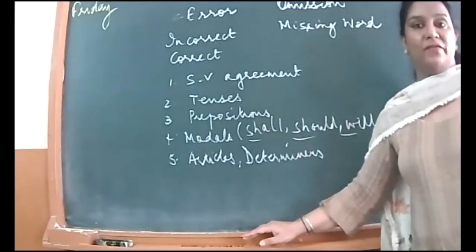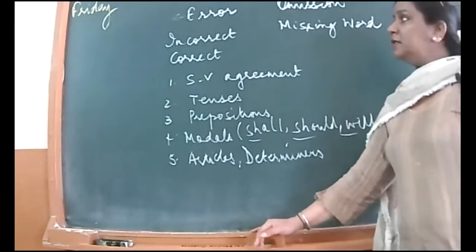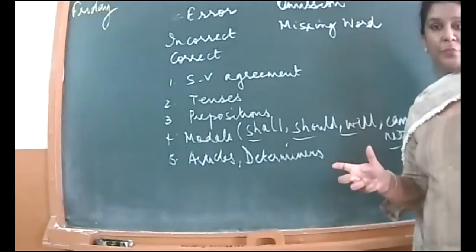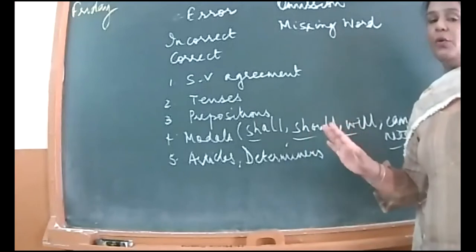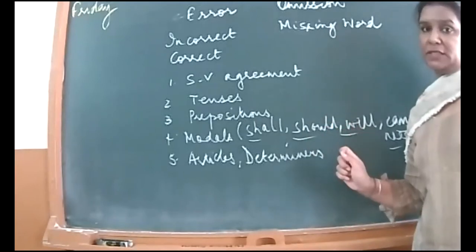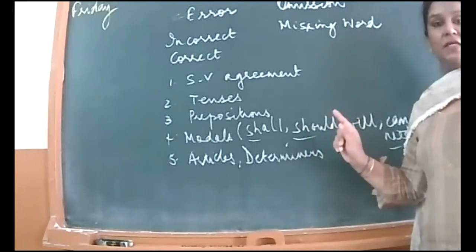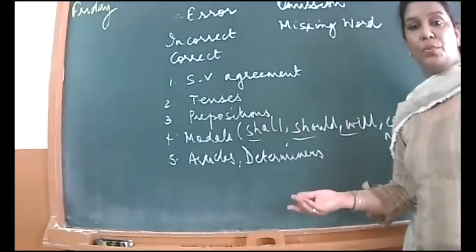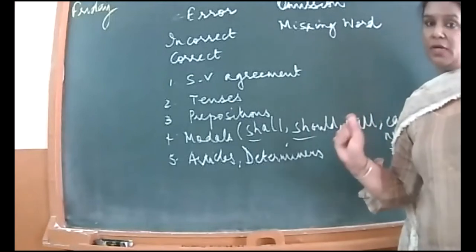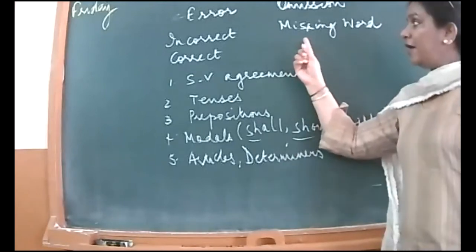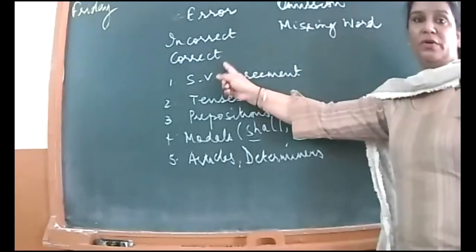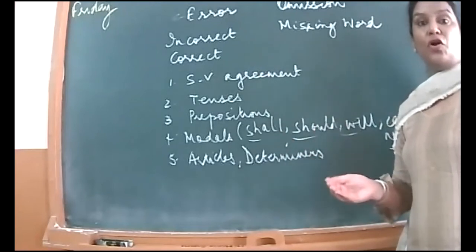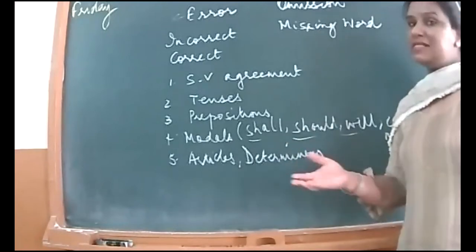Today I have editing exercises for you. Editing means to change, to make a correction. When you have a grammar exercise for editing, that exercise can have an error — that is, a wrong word — and you have to correct it. You write the incorrect word and the correct word alongside it. You can also have an editing passage for omission, where something is missing.